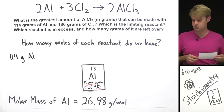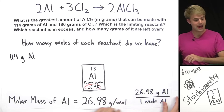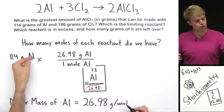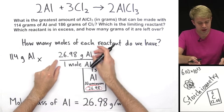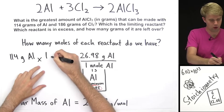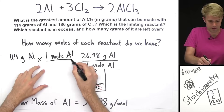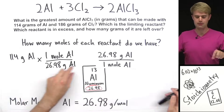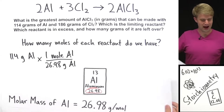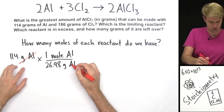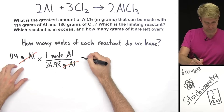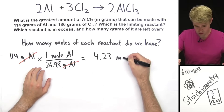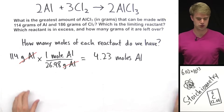This molar mass can be expressed as a fraction, as a conversion factor, with a top and a bottom. I'm going to multiply 114 grams Al by this conversion factor. I want to get rid of grams Al, so I'm going to flip the conversion factor — I'm going to put 1 mole Al on the top and 26.98 grams Al on the bottom. Grams Al cancels out, and doing this times this divided by this gives me 4.23 moles of aluminum.